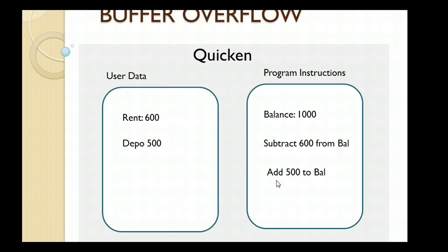Let's run through this quickly to make sure we understand the difference between user data and program instructions. Let's say you start out with a balance of $1,000. If you enter your rent payment for $600, the program knows to subtract 600 from the balance. If you make a deposit of $500, the program knows to add $500 to the balance. So the program instructions are telling the computer what to do.